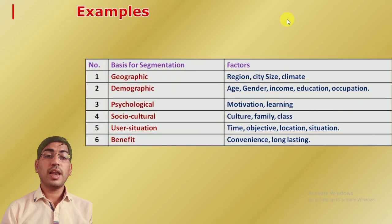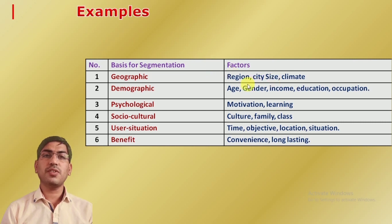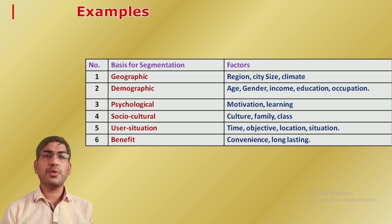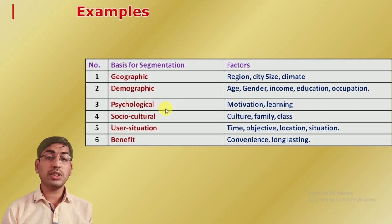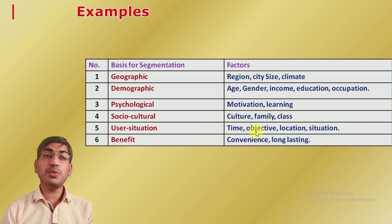The bases for market segmentation include: geographic — like region (north, east, west, south), city size (tier 1, tier 2, metro, non-metro), climate; demographic — age (children, adult groups), gender (male, female), income (small income, more than 50,000, more than 1 lakh), education, occupation; psychological — motivation and learning; socio-psychological — culture, family, class; user situation — according to time, objective, location; and benefit — convenience or long-lasting.